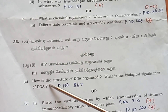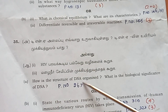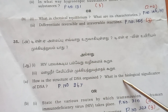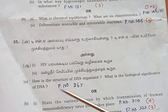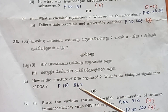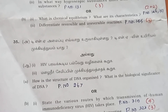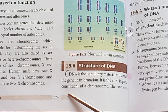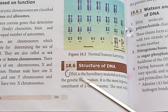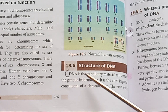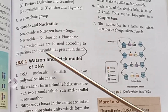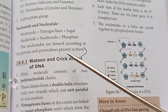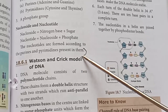Question 35: How is the structure of DNA organized and what is the biological significance of DNA? Page number 267-266. The double helix structure of DNA is described in the textbook.